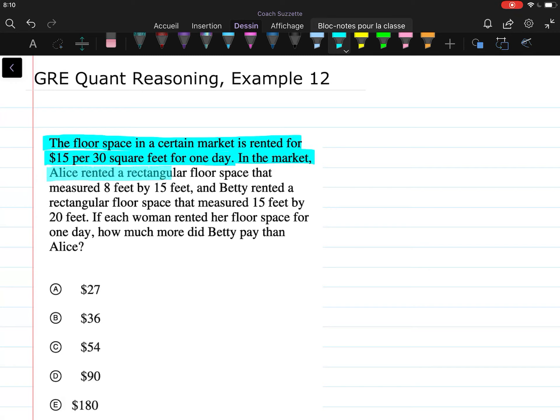Alice rented a rectangular floor space that measured 8 feet by 15 feet, and Betty rented a rectangular floor space that measured 15 feet by 20 feet. If each woman rented her floor space for one day, how much more did Betty pay than Alice?